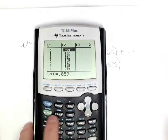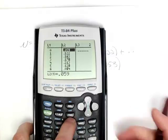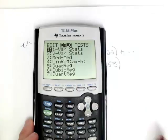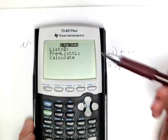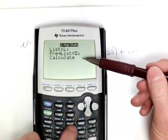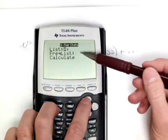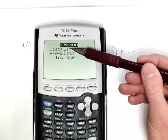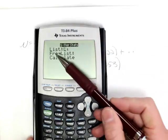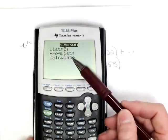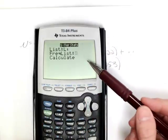So what you need to do is press stat, go back to stat, right arrow over to calc, and we're going to select one variable statistics. Now, it may be the case that your frequency list is blank. So when you get to the screen, you want your x list, your list of x values to be in list 1, so that's going to be list, and then the frequencies will be the corresponding probabilities. So those are in list 2.